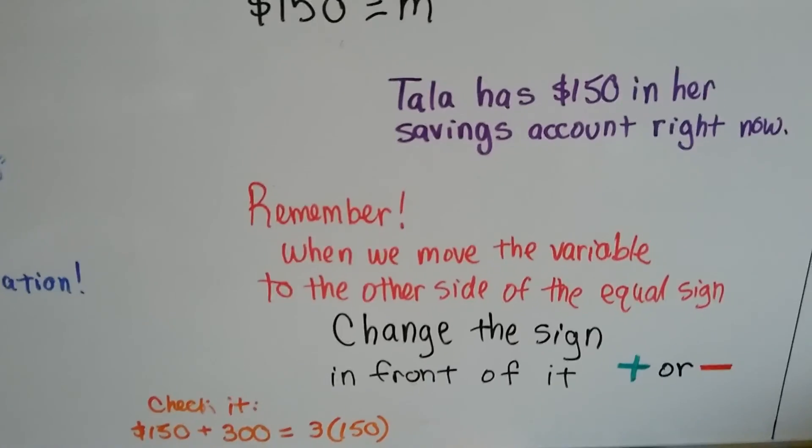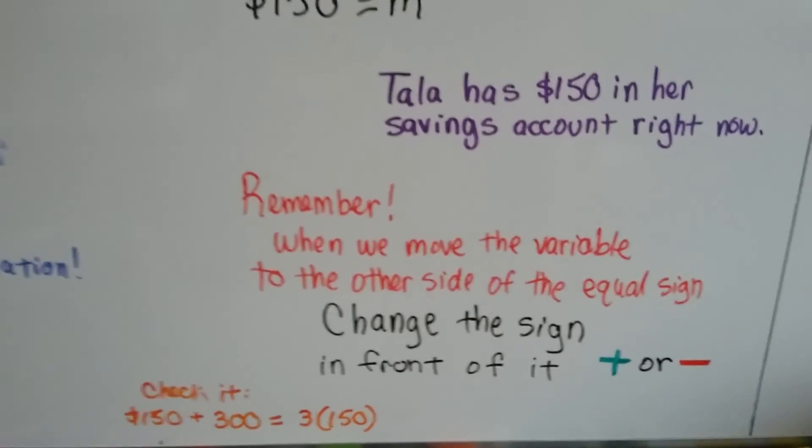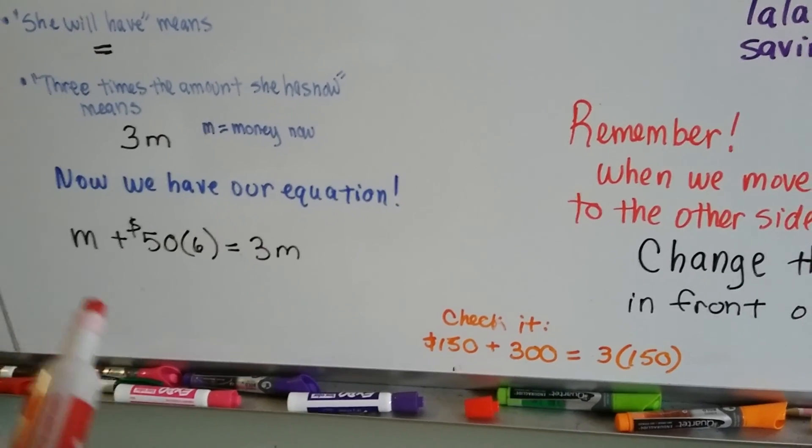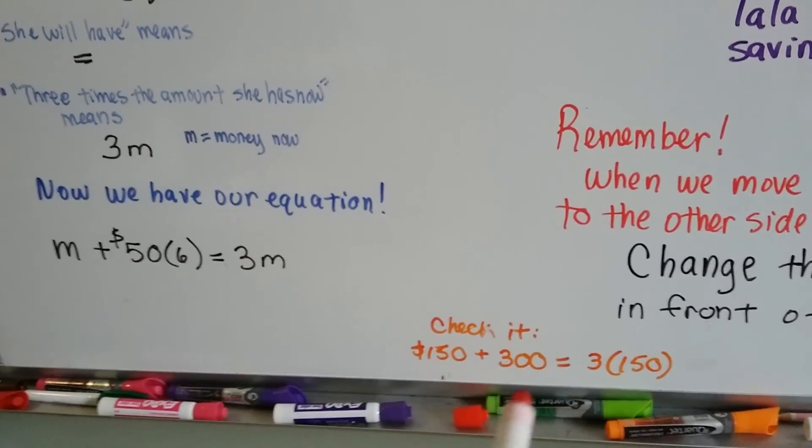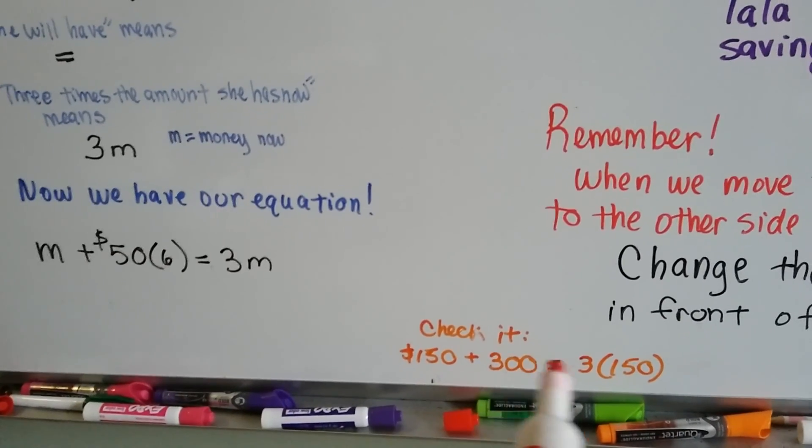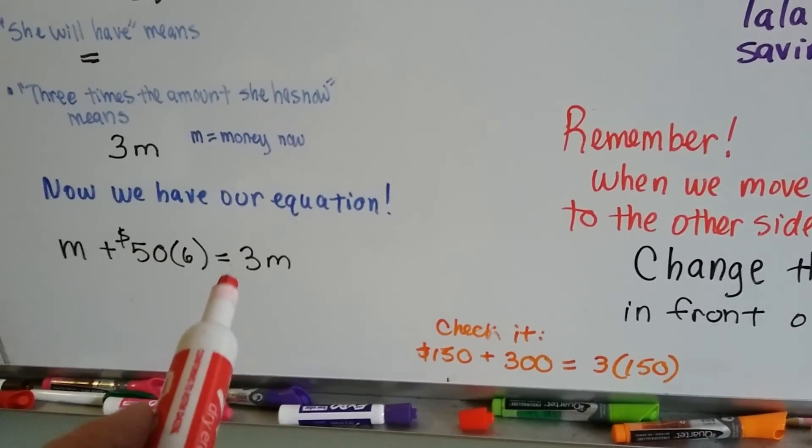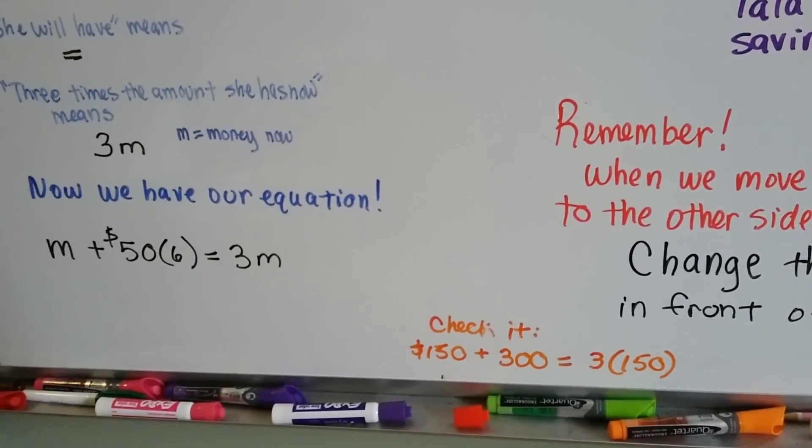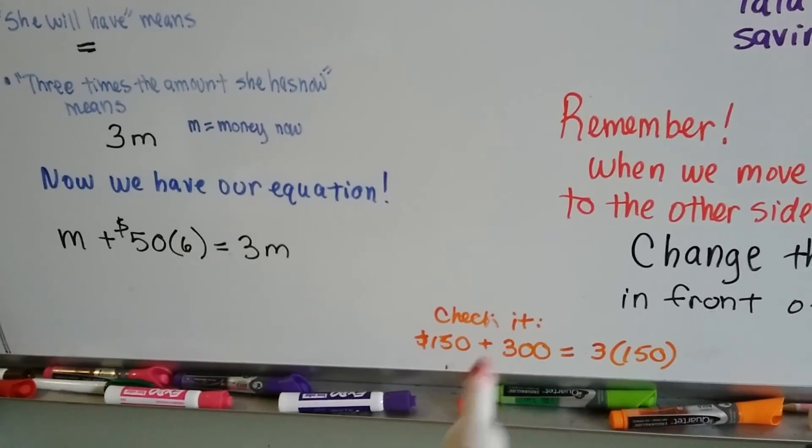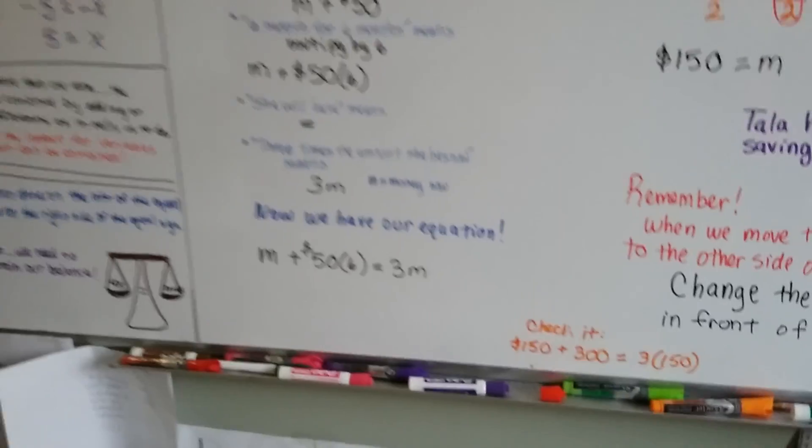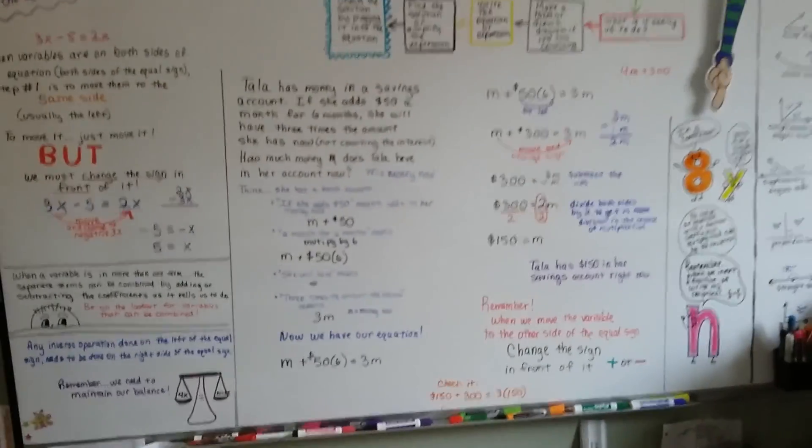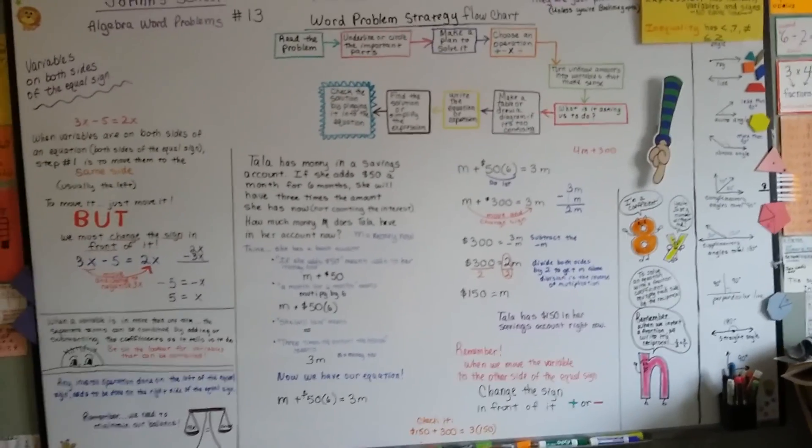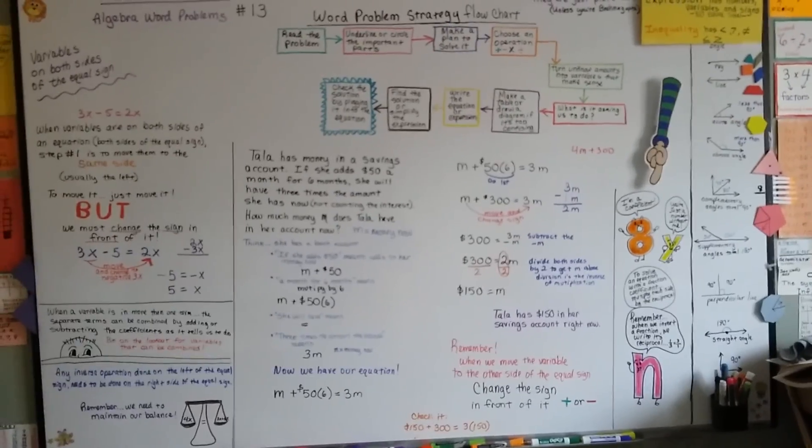So remember, when we move the variable to the other side of the equal sign, change that sign in front of it, plus or minus, whatever it is, and then do your math. If we check this to make sure it's right, M, $150 plus the $300, is going to equal 3 times M, 3 times the 150. Yeah, here's a 1 and then there's two of them in here, 150 and 150 makes 300. So we know that there's three 150s on this side and on this side. So we did it right. So just remember, change the sign when you move that variable over to the other side of the equal sign. And you'll be fine. We're going to keep going. We're going to jump to the next topic. And I'll see you there. Bye.